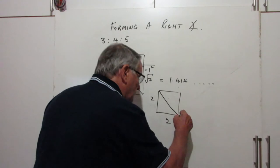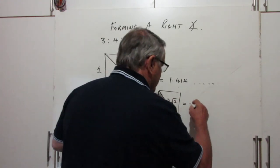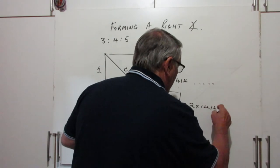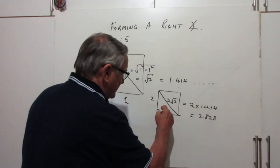The diagonal would be 2 square root 2. So it would be 2 times 1.414, which is 2.828. Now you can prove this easily enough.